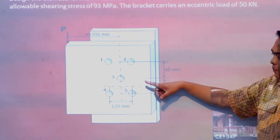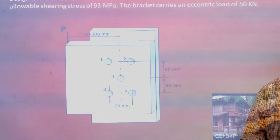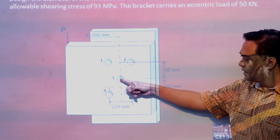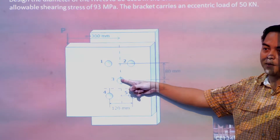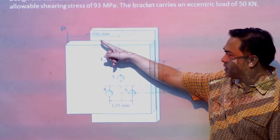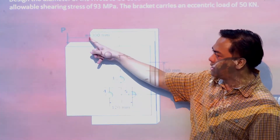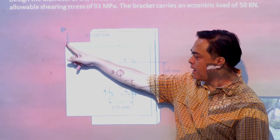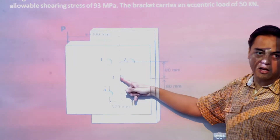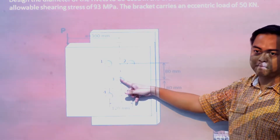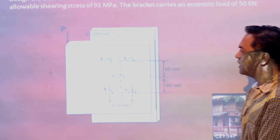By inspection, the location of the center would be at the center of rivet number 3. Eccentricity is defined as the distance of the point of application of the load from the center of the group of rivets. That is the definition of eccentricity.